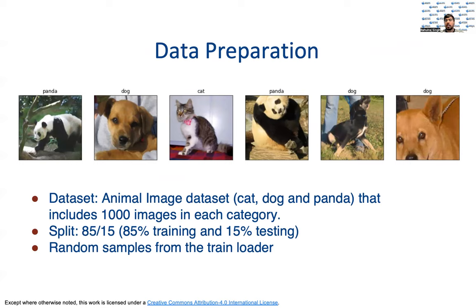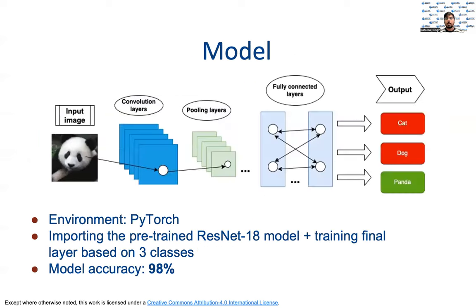A new animal image dataset is used for this problem, which has three classes: cat, dog, and panda. This is a small dataset with a thousand images in each class. The idea behind taking a small dataset is that if the explainer provides reasonable information even with small data available, then we can be confident that when it has millions of input images or data points, it would perform well as well. As for the modeling part, we imported the pre-trained ResNet model, but we trained the final layer based on our three classes. This gave us 98% accuracy. This diagram here shows the model architecture for our specific problem.